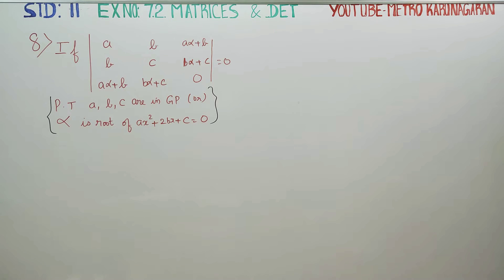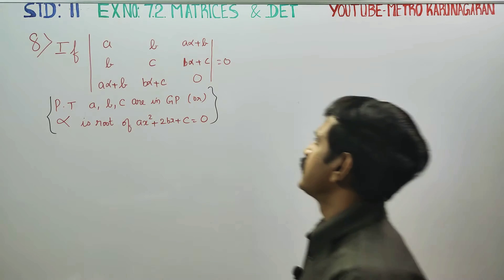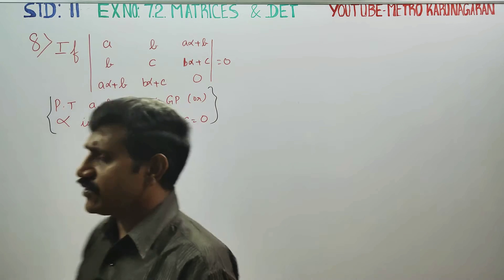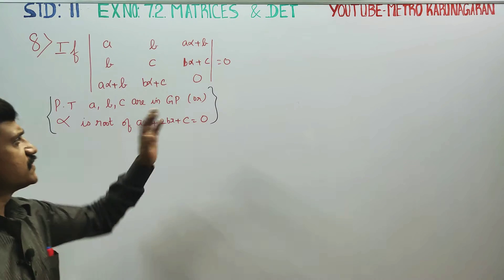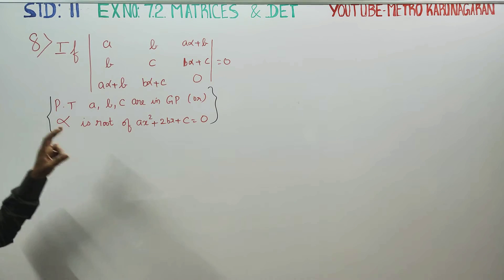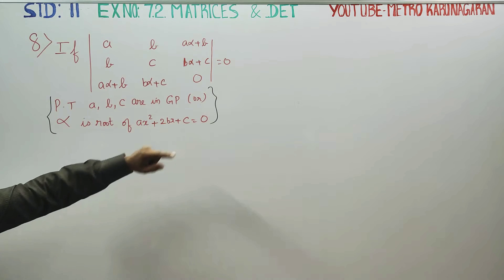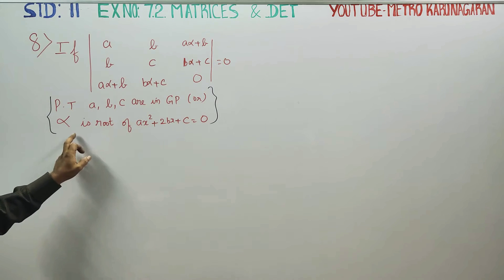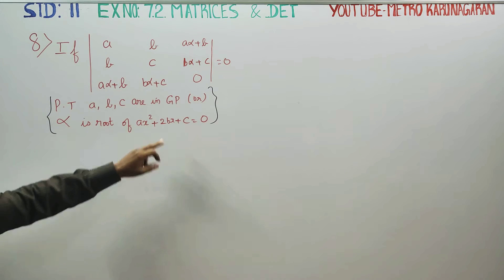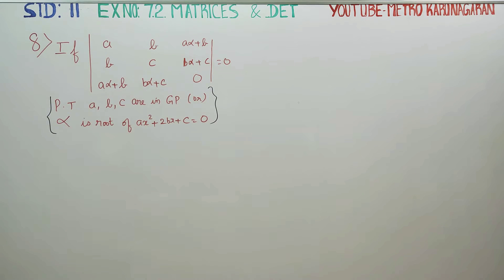Dear Levin Standard students, in exercise number 7.2, sum number 8, if this value of the determinant is 0, we have to prove two conditions: (a) a, b, c is in GP, and (b) alpha is the root of ax squared plus bx plus c equals zero.